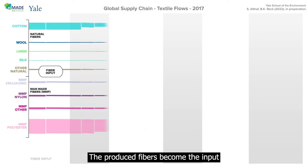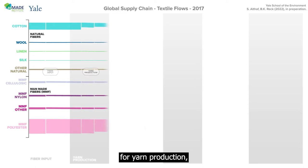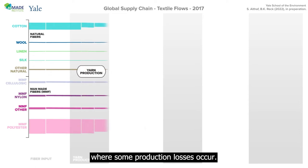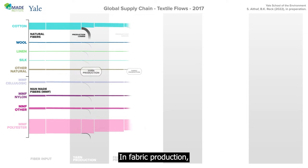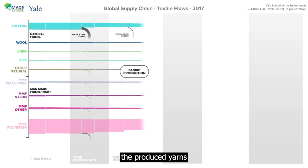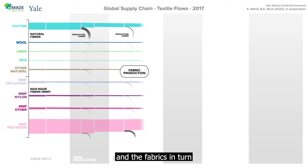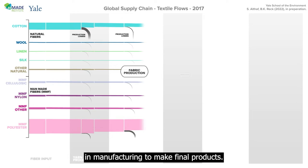The produced fibers become the input for yarn production, where some production losses occur. In fabric production, the produced yarns are then converted to fabrics, and the fabrics in turn are used in manufacturing to make final products.